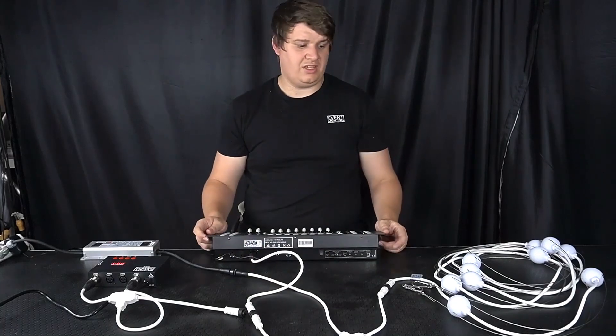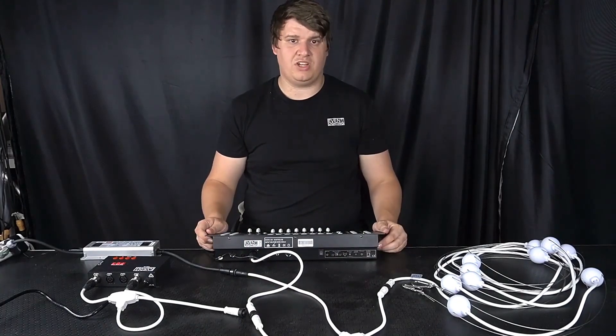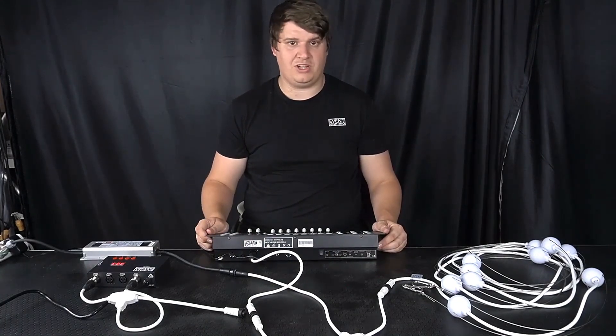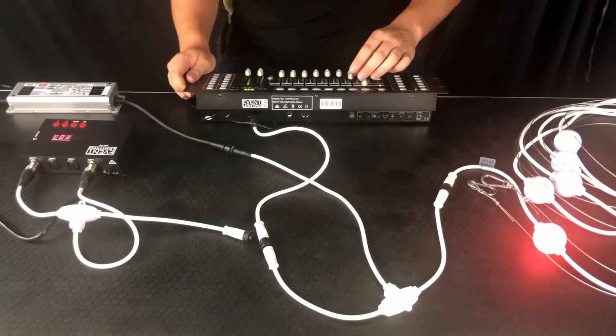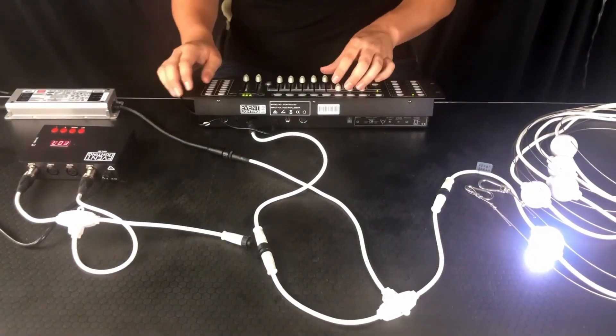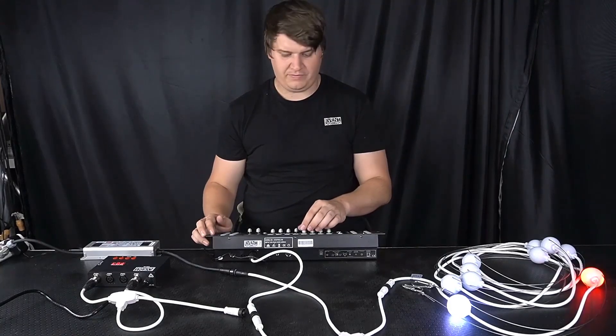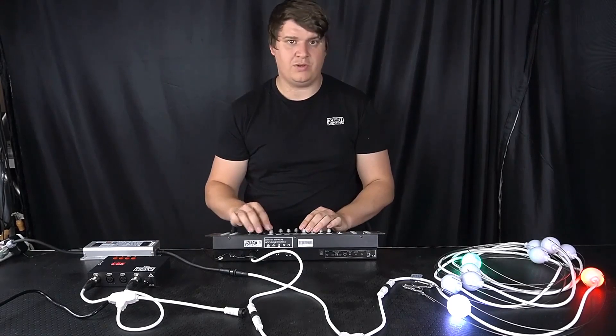As mentioned these do take RGB so three channels per ball which means you'll have 30 channels per string in this case. So the first one you've got your R, G, B and then you get your second ball from channel four and so on.